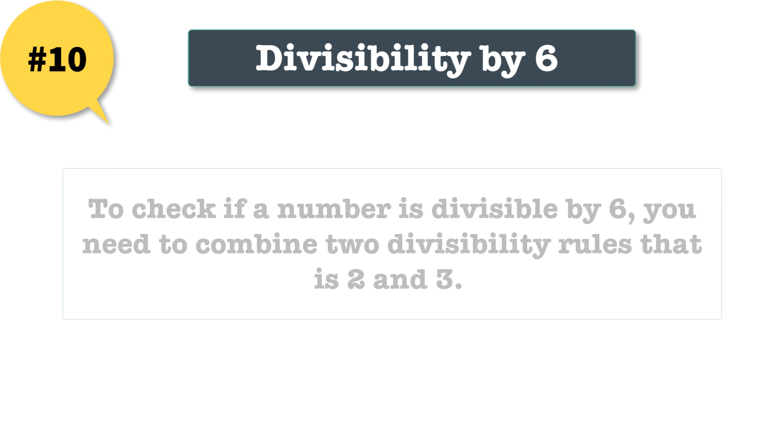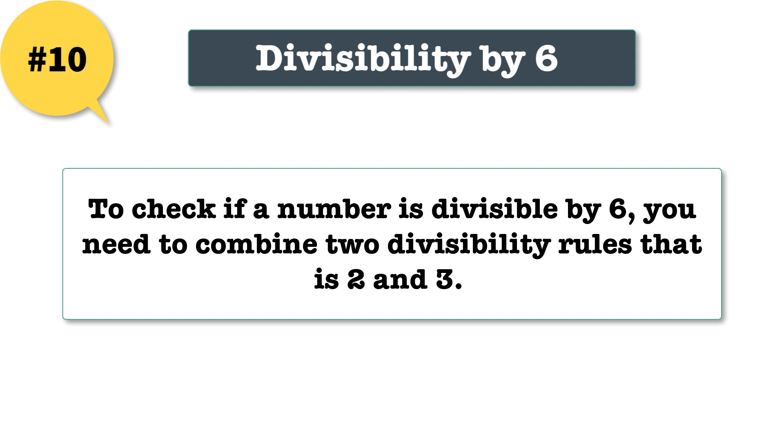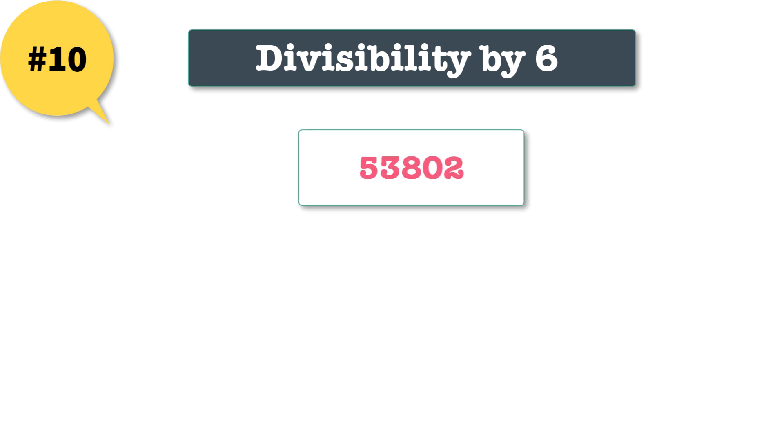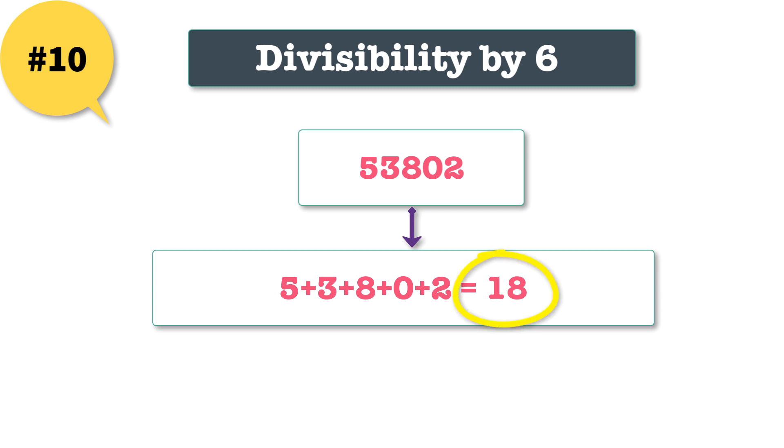10: divisibility by 6. To check if a number is divisible by 6, you need to combine two divisibility rules, that is 2s and 3s. If it is divisible by both 2 and 3, then it is divisible by 6. We already know how to check the number is divisible by 3, and we know even numbers are divisible by 2. In this example, this number is divisible by 2 because it is an even number. And to see if a number is divisible by 3, add up the digits. If the sum is divisible by 3, so is the number. Here, sum of all numbers is divisible by 3 and hence the number is divisible by 3. Since the number satisfies divisibility rules, the number is divisible by 6. Very very easy.